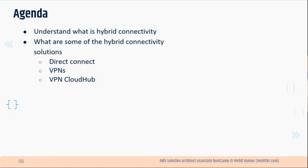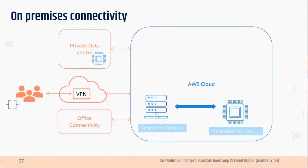We are going to explore the options to connect on-premises to AWS cloud. First, we need to connect a private data center. Second, we have office users located anywhere who need VPN connectivity to access the AWS cloud. Rather than downloading an SSH key and connecting over the public internet, they can access EC2 instances through VPN. Office connectivity means you have servers in the office that you want to connect to your AWS cloud.